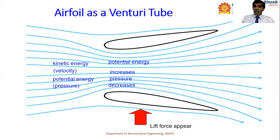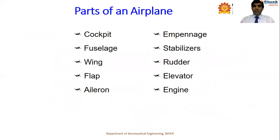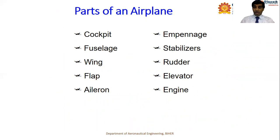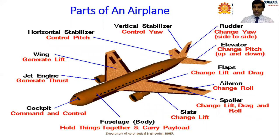Parts of an airplane: the front nose cone of the airplane is called the cockpit, where the pilot sits. Where passengers sit is called the fuselage. Lift is generated mostly by the wing, which has different kinds of flaps depending on the operation. There is also the aileron on the wing. At the back of the aircraft are the horizontal and vertical stabilizers, a rudder for directional control, elevators, and the engine.